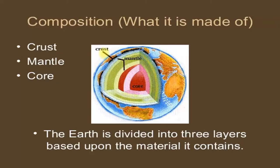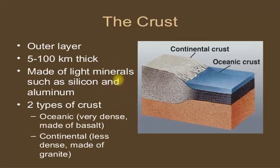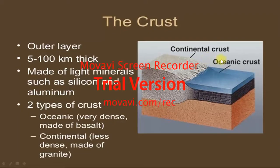The outermost layer is called the crust. The crust is the outer layer, about 4 to 5 kilometers thick. It is made of light minerals, including silicon. The crust has two types: continental crust and oceanic crust.